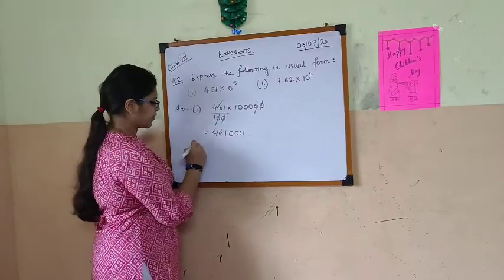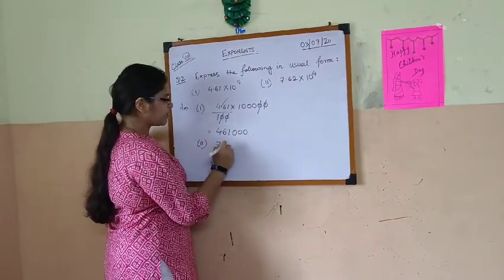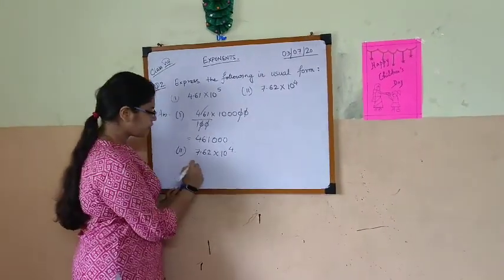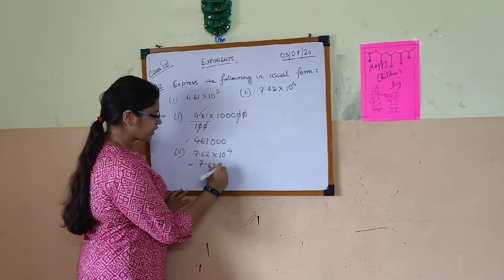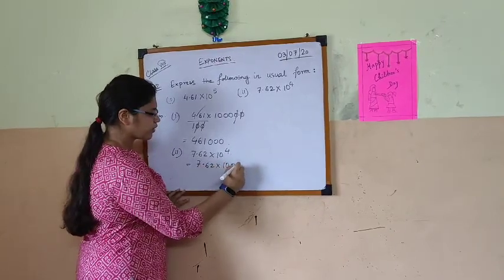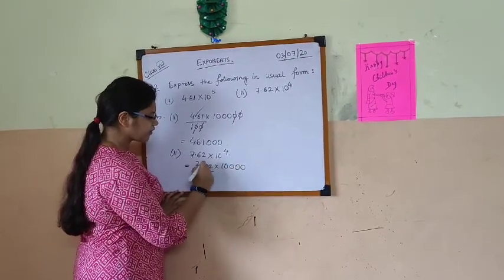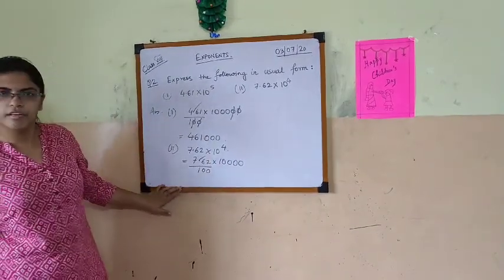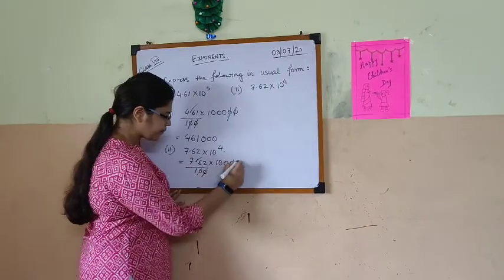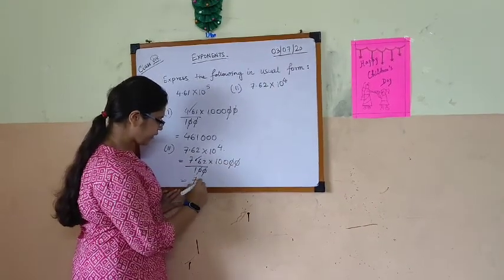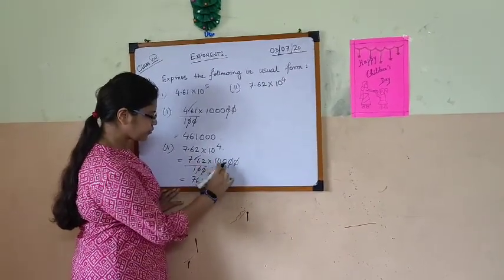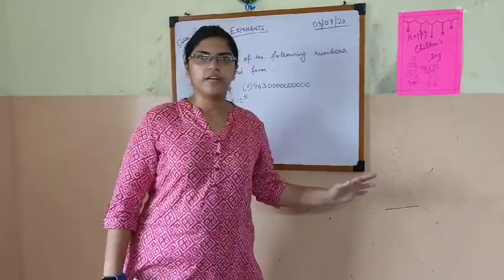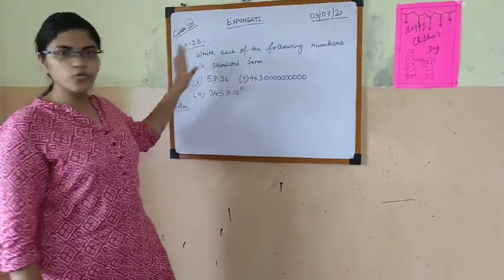Now next one is 7.62 into 10 to the power 4. We will first write this 10 to the power 4 as 1, 2, 3, 4 zeros. And for shifting the decimal 2 digits we will write 100 here, and this decimal will be removed. Canceling them we will be getting 76,200. So these two are in usual form.